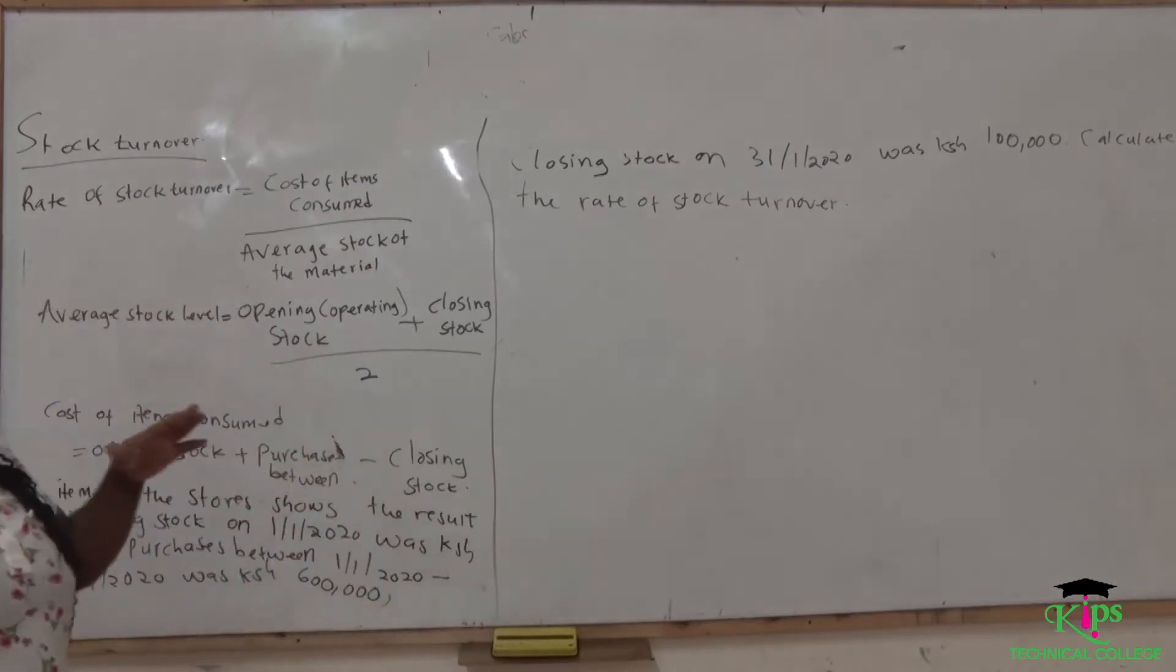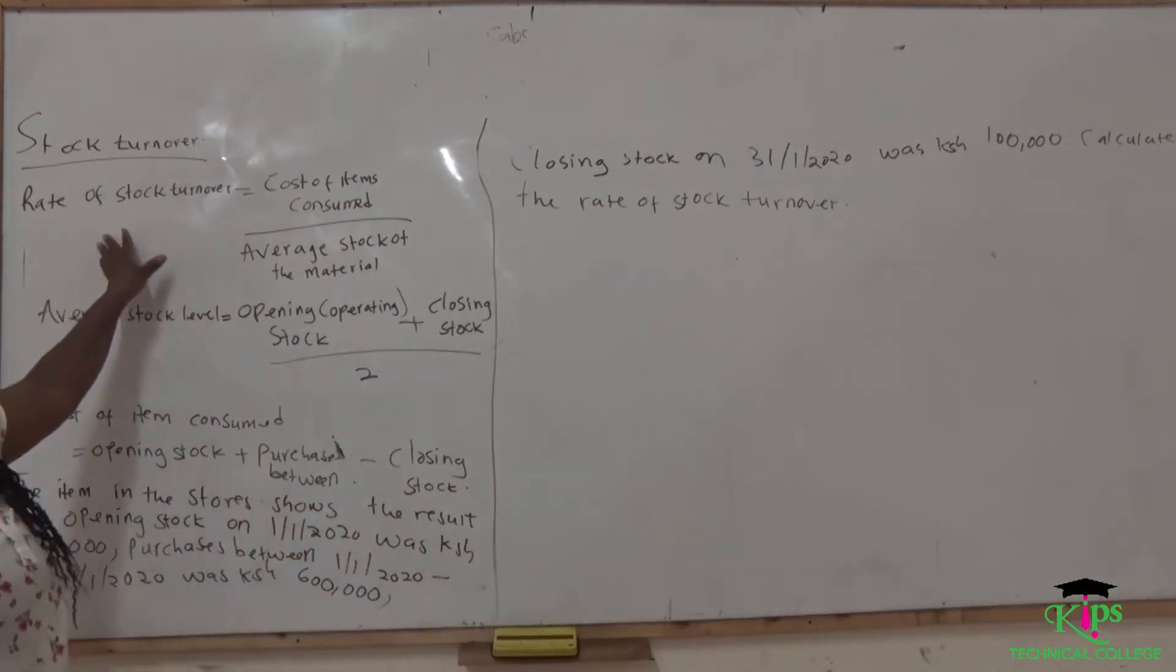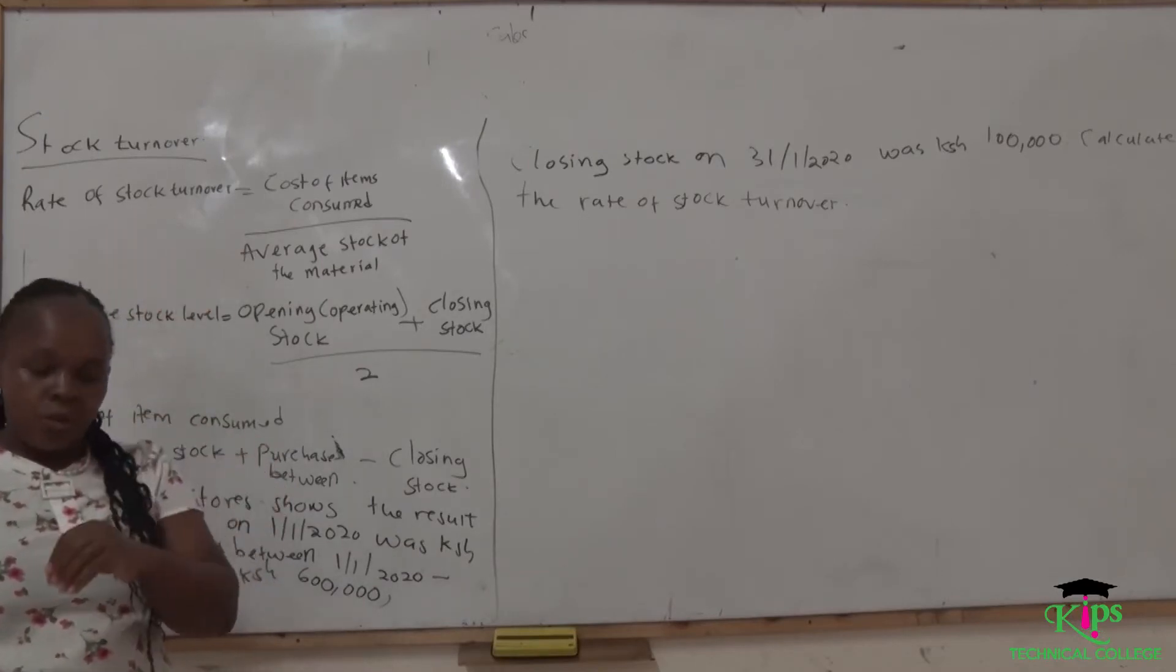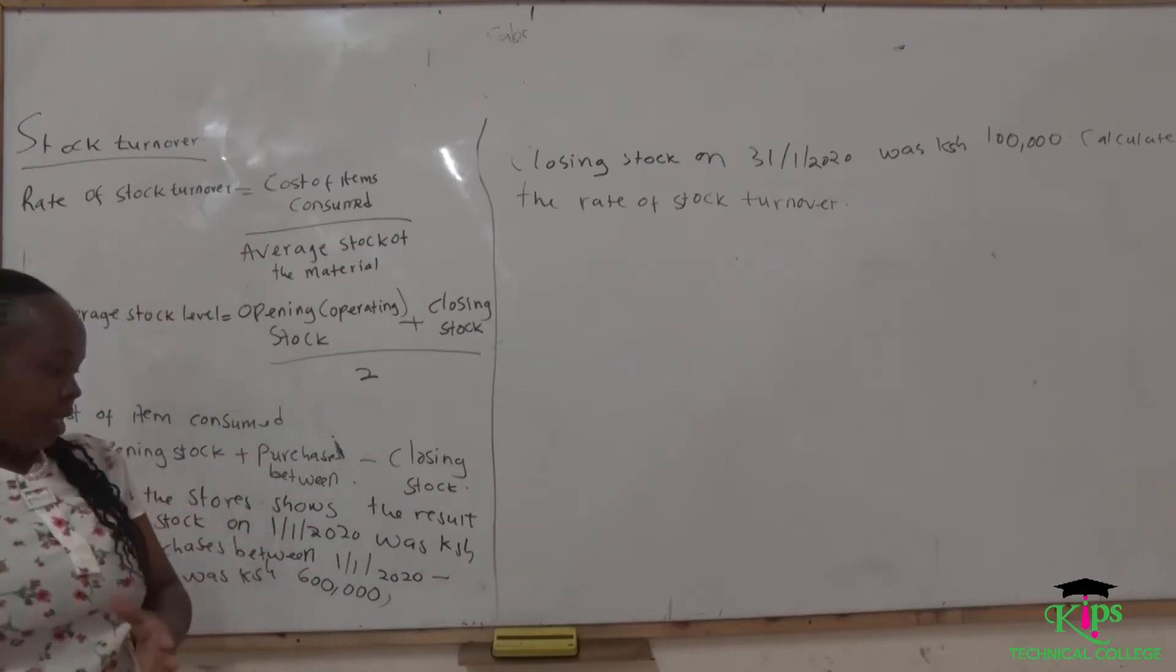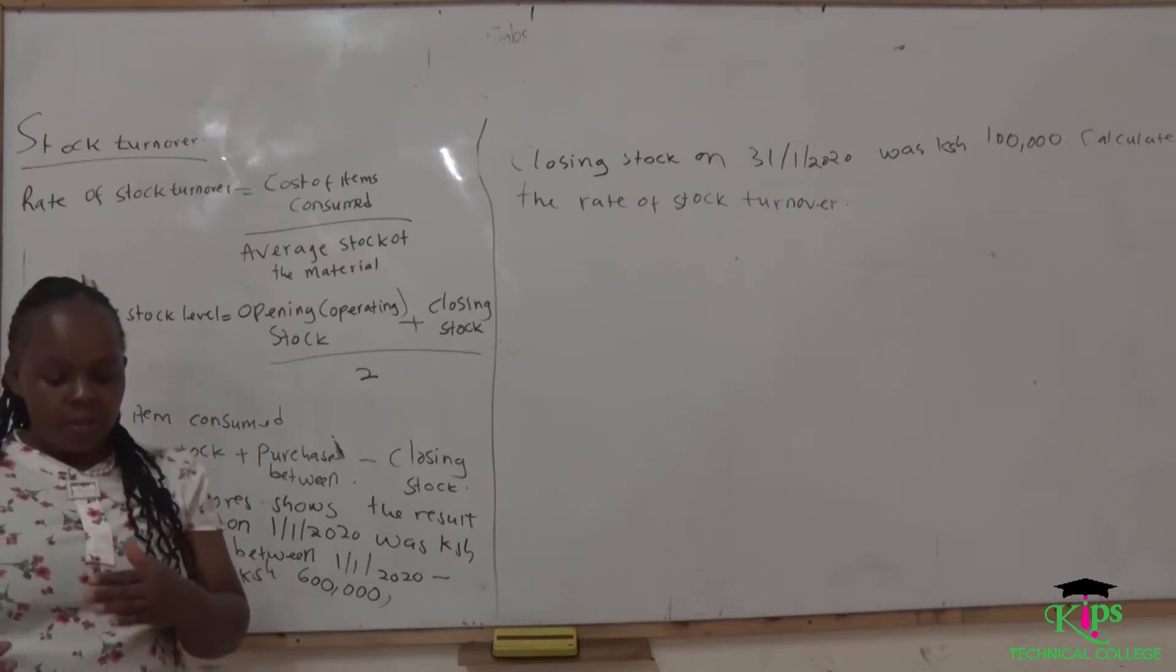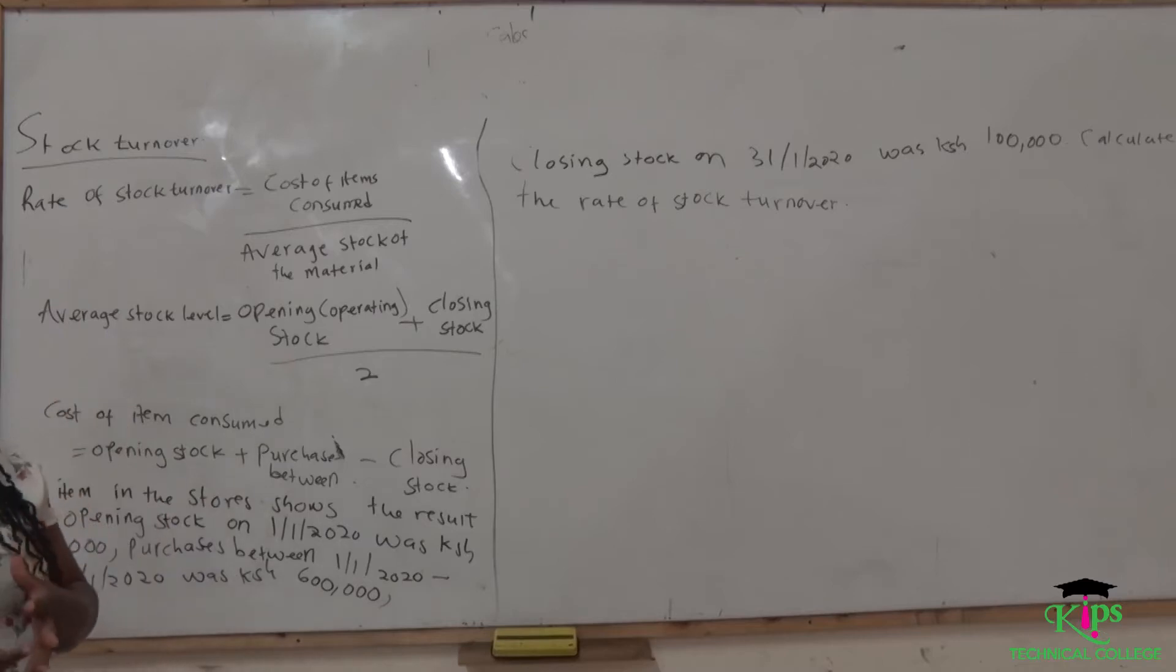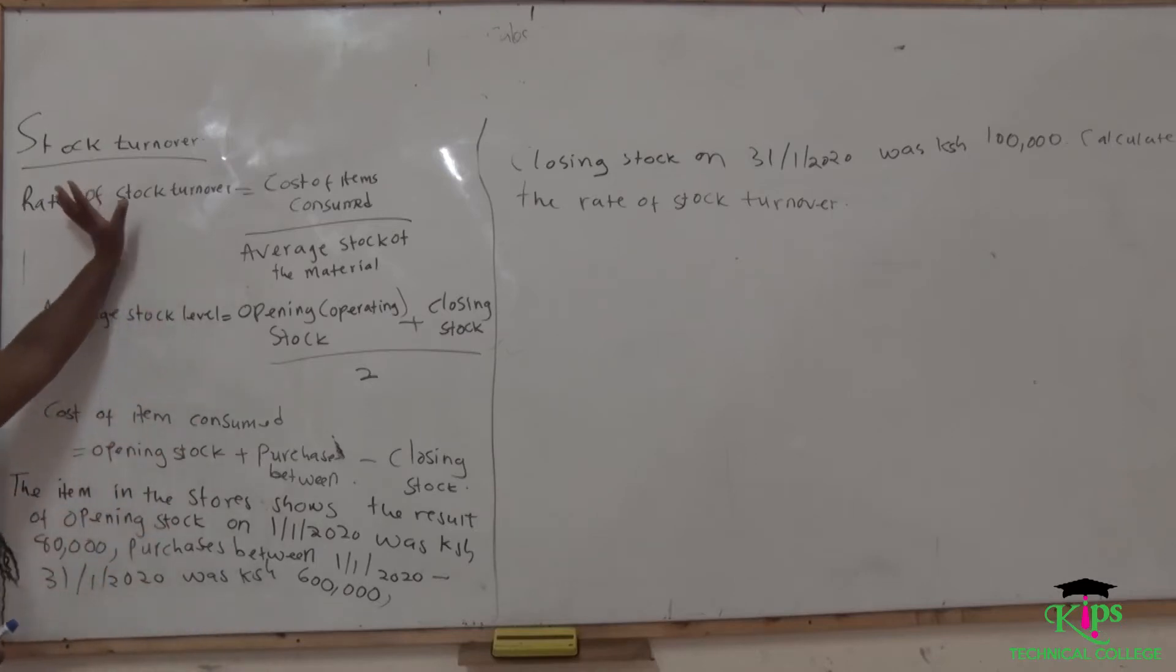We are being told why we do a stock turnover is to determine the items that are in store and are not being used. Because we keep the stock locked in the store, we are wasting a lot of resources which is not supposed to be wasted. There is a formula of calculating the stock turnover and we call it rate of stock turnover.